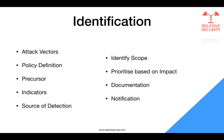The identification phase is focused on detecting and determining whether a departure from normal operations within an organization constitutes a security incident. It involves assessing the nature and scope of the identified deviation to confirm whether it qualifies as an incident. This phase is crucial for swiftly establishing the boundaries or extent of the incident. The overall goal is to efficiently identify security incidents, enabling a prompt and targeted response to mitigate potential risks and minimize impact.